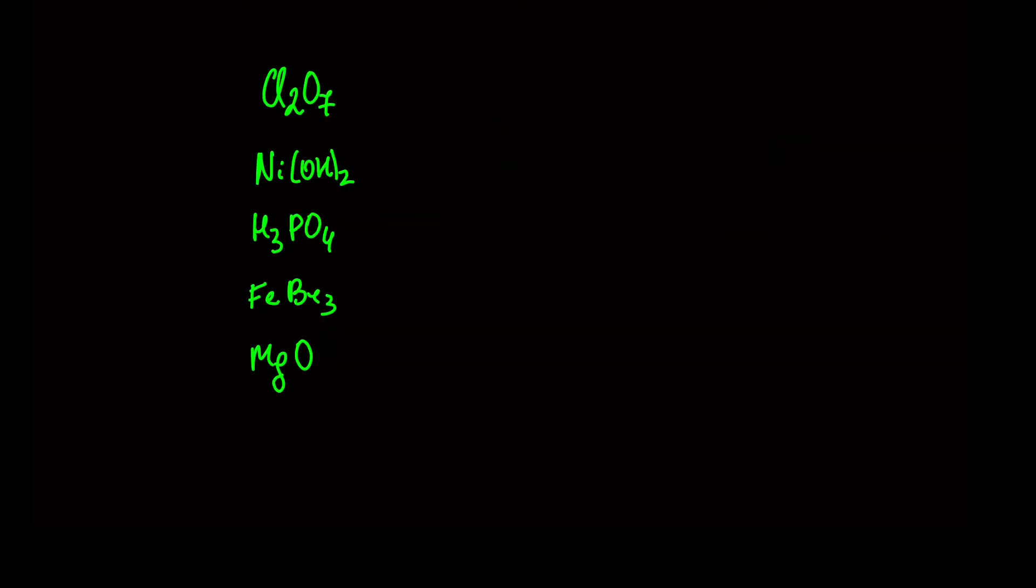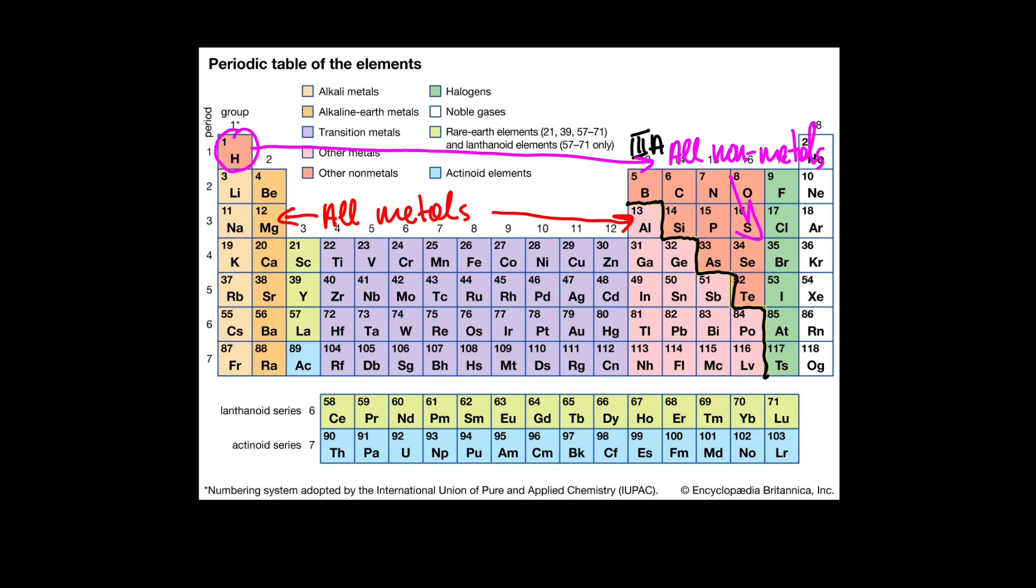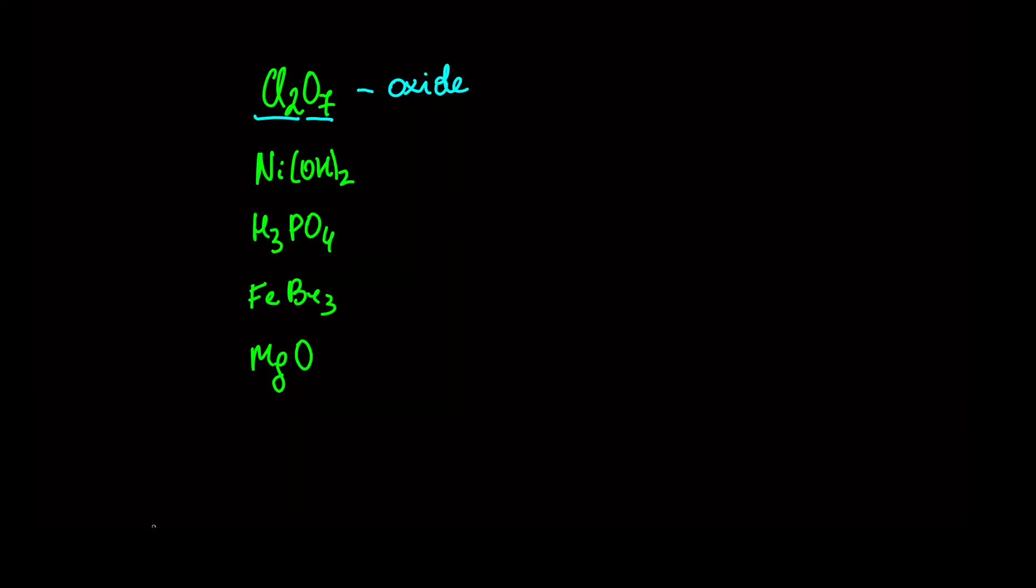Here I have five compounds. Let's assign each compound to its class. Cl2O7 has only two elements. One is oxygen, so it's oxide. Now Cl is a nonmetal. If we look at a periodic table, we'll see chlorine on the right side of the line. So Cl2O7 is an acidic oxide.